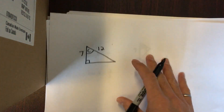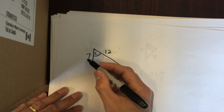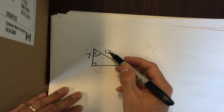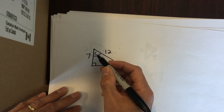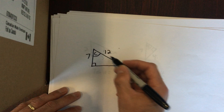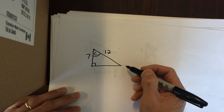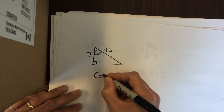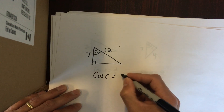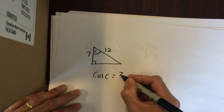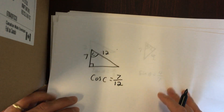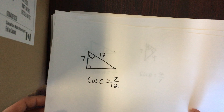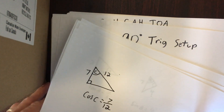Finally, here's the last possible case: we have the adjacent and the hypotenuse. I know that's adjacent because it's beside the angle in question. There are two sides beside every angle, but the longest side is the hypotenuse. So the cosine of this angle is the adjacent side over the hypotenuse.